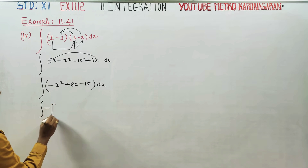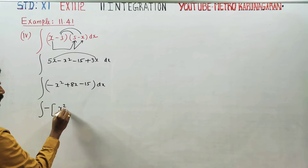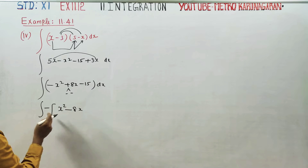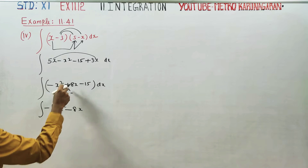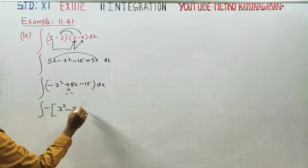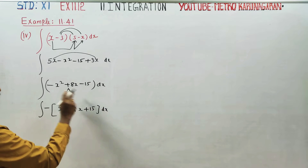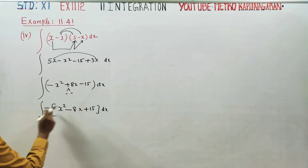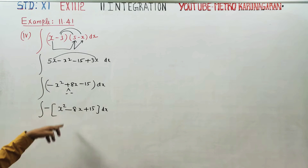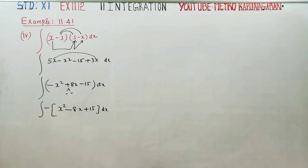Taking minus as common: x squared minus 8x plus 15. You have to add minus 1 and then plus 15 dx. If you have minus common, you have to factor accordingly, giving minus x squared plus 8x minus 15.